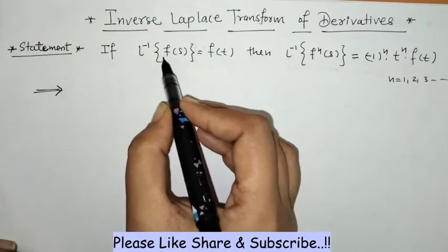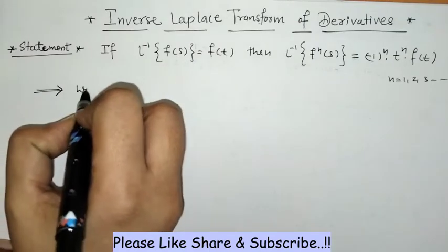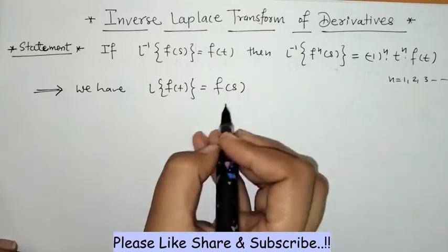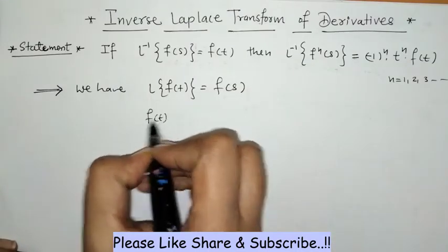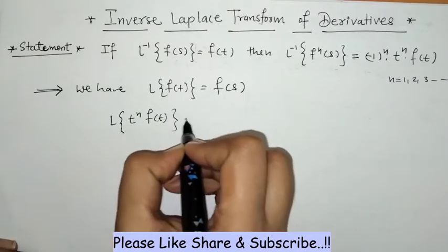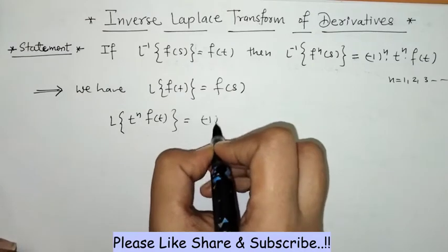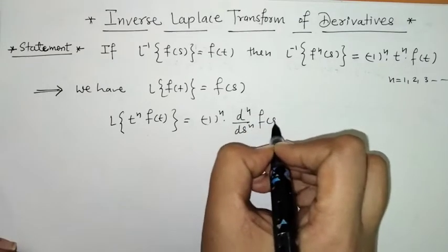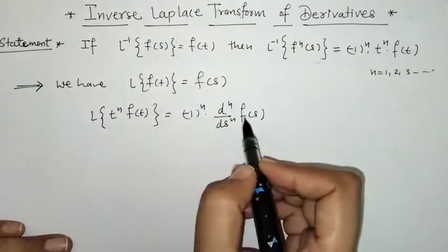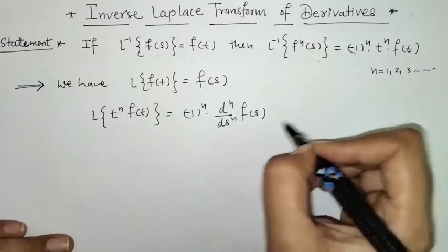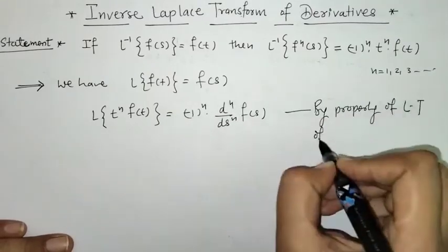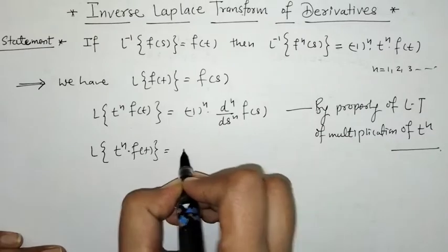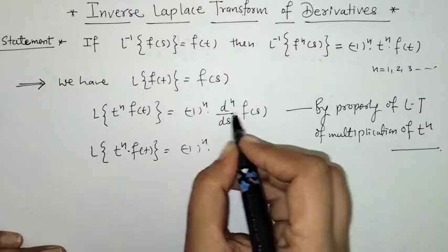To prove this property, we are given that L-inverse of F(s) equals f(t), which means the Laplace of f(t) is F(s). We know that when we multiply f(t) by t^n, its Laplace is given by (-1)^n times the nth derivative of F(s). This is the property of Laplace transform of multiplication by t^n.